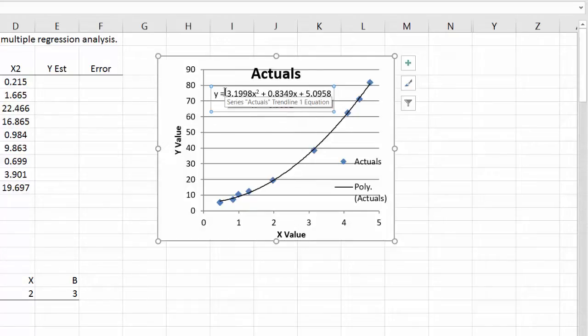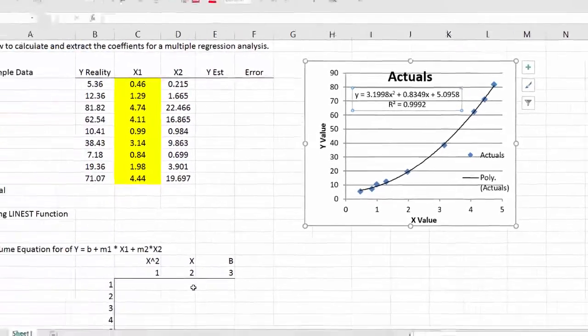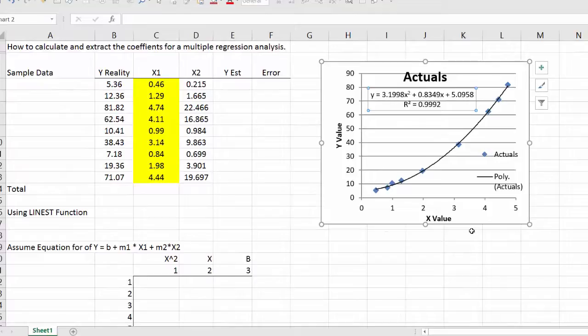But unfortunately we can't use these coefficients in an equation. So what we want to do is extract them into something else. And we want to be able to do this for any number of variables actually. So this is where we're going to use the LINEST function.